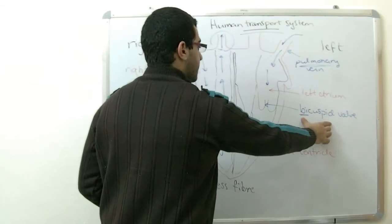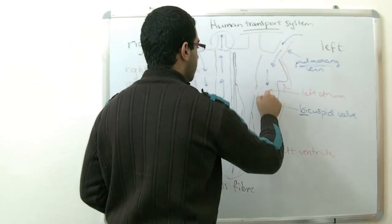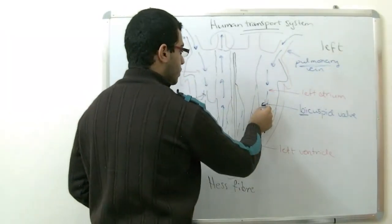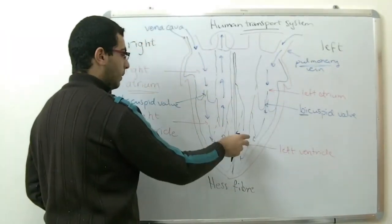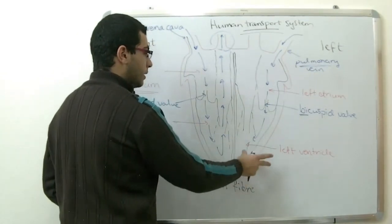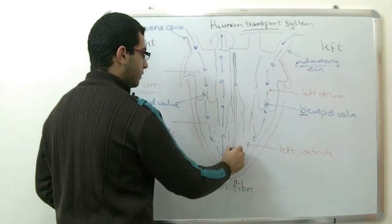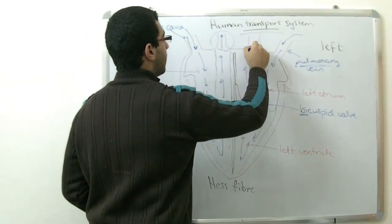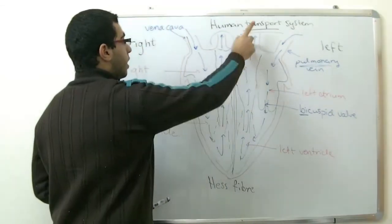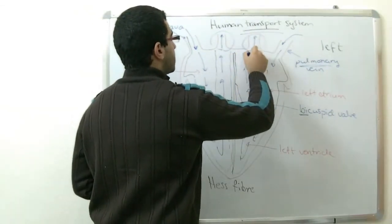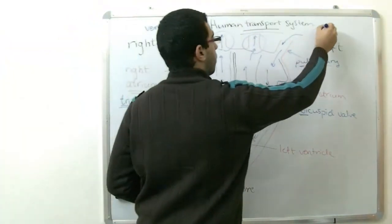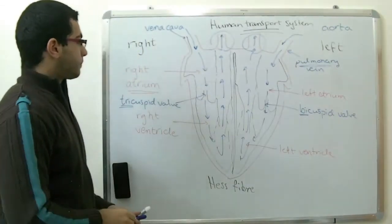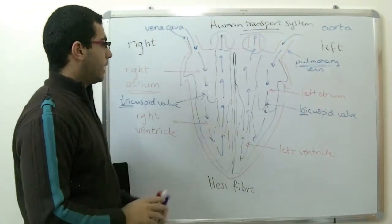The bicuspid valve is open to let the blood move downwards to the left ventricle. Then it closes, leading all the blood to accumulate in the left ventricle. The left ventricle contracts to let the blood move once more through this artery upwards. This artery is called the aorta to the other body parts.